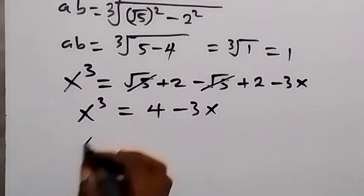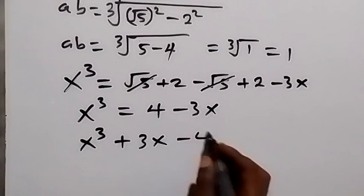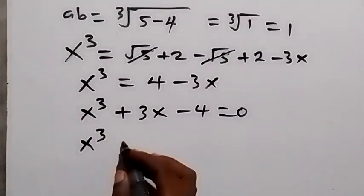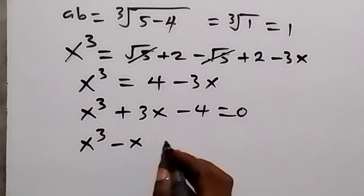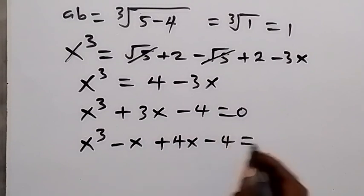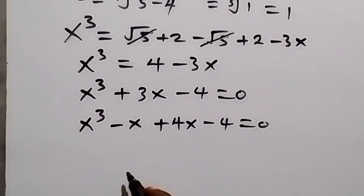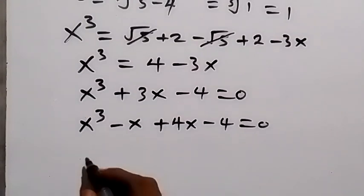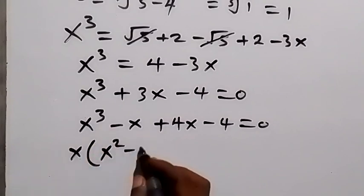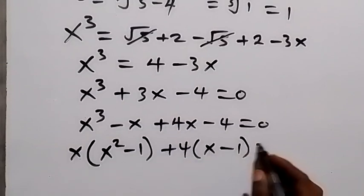Taking everything to one side: x³ + 3x − 4 = 0. We can rewrite this as x³ − x + 4x − 4 = 0, since −x + 4x gives 3x. Grouping: x(x² − 1) + 4(x − 1) = 0.